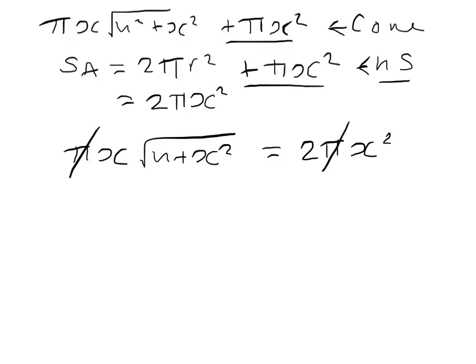And we can cancel the x into the x there. So we have the square root of h squared plus x squared equals 2x. Now if I square both sides...